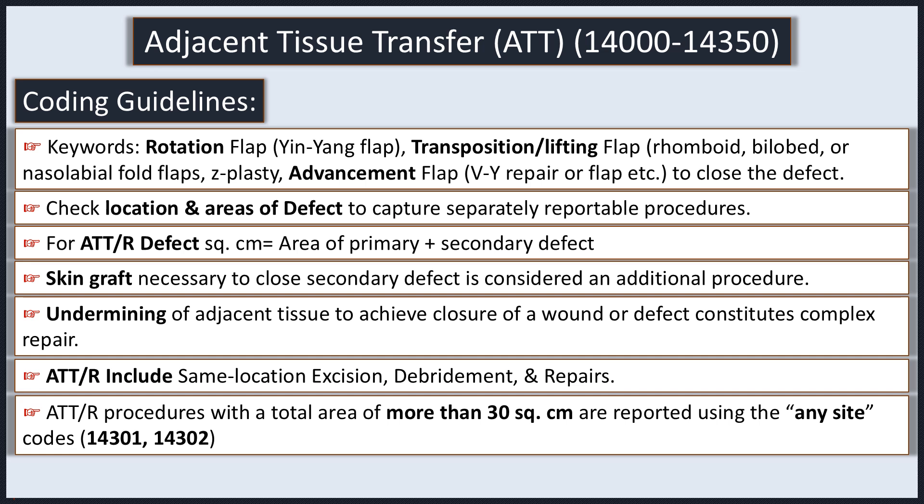Key terms you should know include rotation, transposition, lifting, and advancement flap, which are used to close defects. Adjacent tissue transfer codes are based on location and the area of the defect, which equals the sum of the primary and secondary defects. If a skin graft is necessary to close a secondary defect, code it separately. Creating a flap requires an incision; merely undermining adjacent tissue to achieve wound closure constitutes a complex repair. Same-location excision, debridement, and repair are included in adjacent tissue transfer — do not code them separately. Codes 14301 and 14302 are used for any site only when the total defect area exceeds 30 square centimeters.